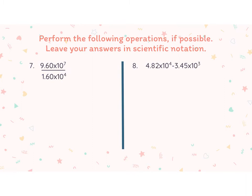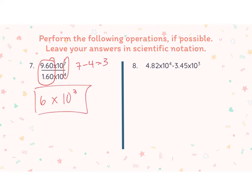Let's do some division. In number seven, I have 9.60 divided by 1.60 and 10 to the seventh divided by 10 to the fourth. First I divide the coefficients: 9.6 divided by 1.6 gives me exactly 6. Then with the powers, I take 7 minus 4 to get 3, so the answer is 6 times 10 to the third power. When dividing scientific notation, you subtract the exponents.